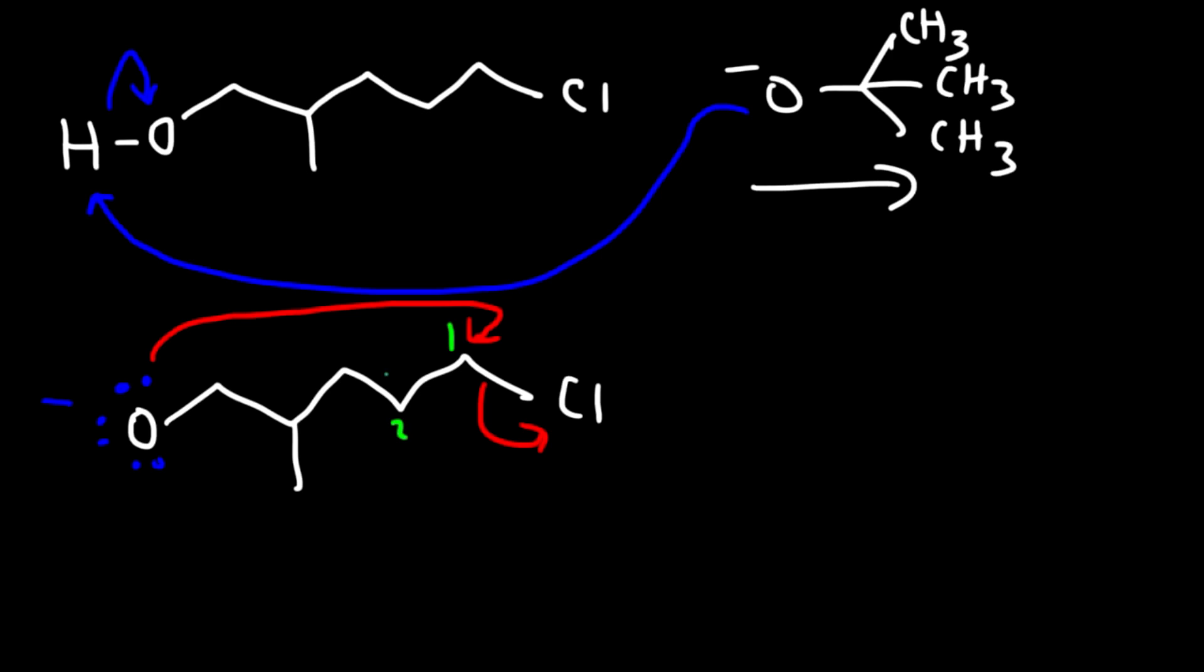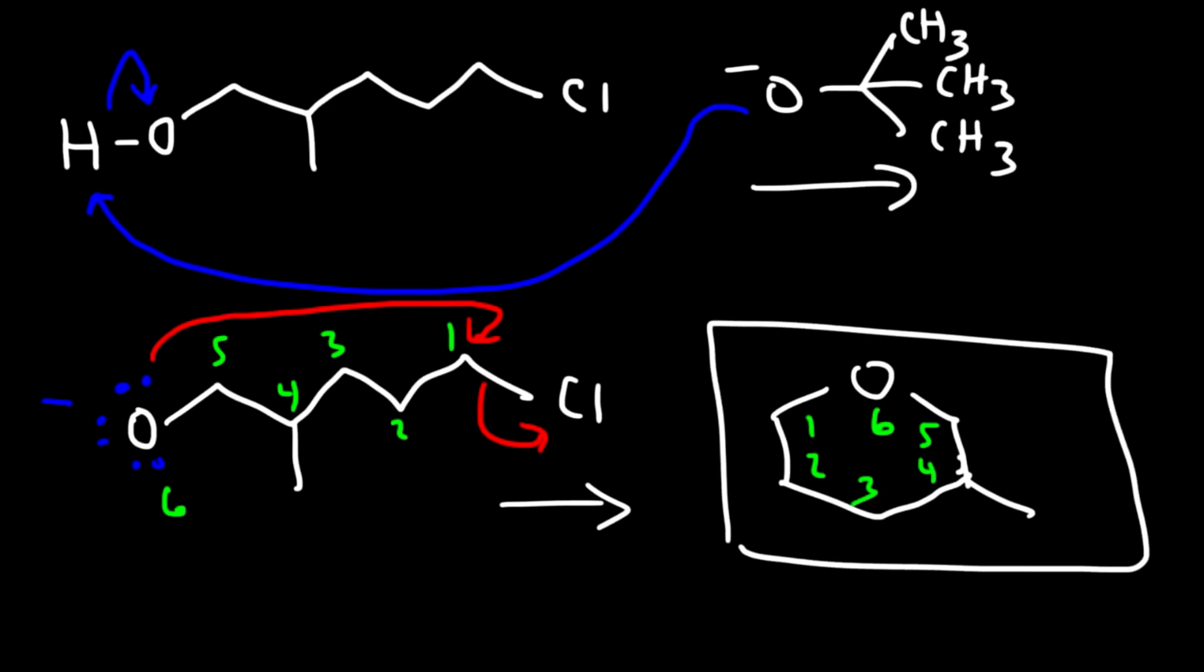It's going to close and form a ring. Let's call this one, two, three, four, five, six. So we're going to get a six-membered ring. So let's say this is six. This is going to be one, two, three, four, and five. Attached to carbon-4, we have a methyl group. And this is basically it. So this is the final product of this reaction. We have basically an ether inside of a ring.